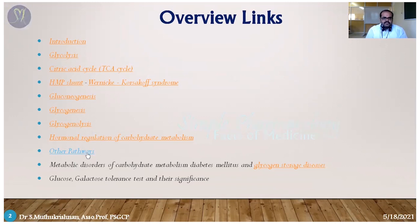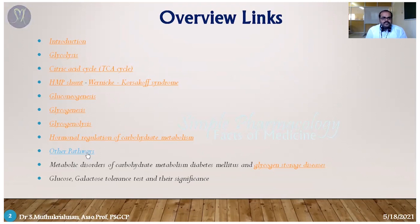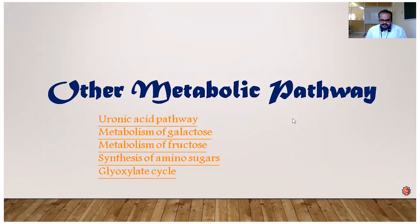Apart from those pathways, carbohydrate molecules may enter some other pathways also — these are called 'other pathways.' Apart from glucose, carbohydrate molecules like galactose, fructose, and mannose — how they are metabolized, how they convert into other products, and how they produce energy — that comes under this chapter. Other pathways are majorly divided into five: uronic acid pathway, metabolism of galactose and fructose, synthesis of amino sugars, and glyoxylate cycle.